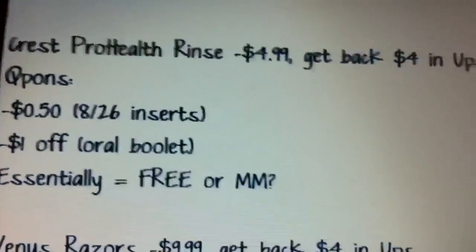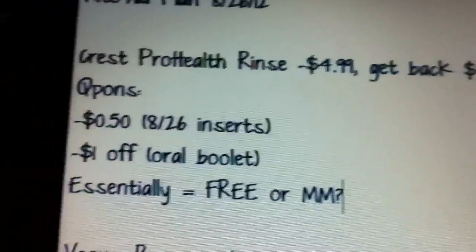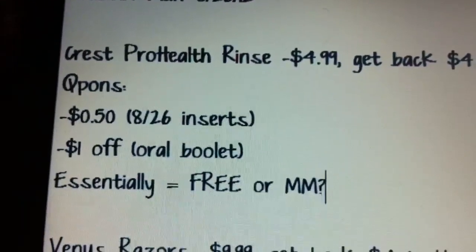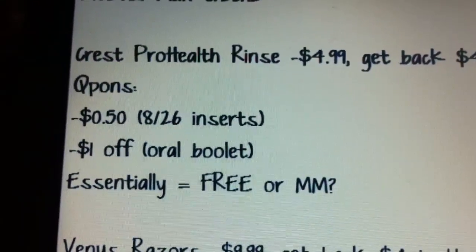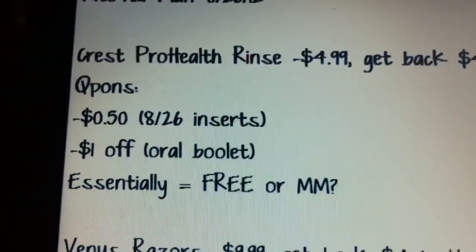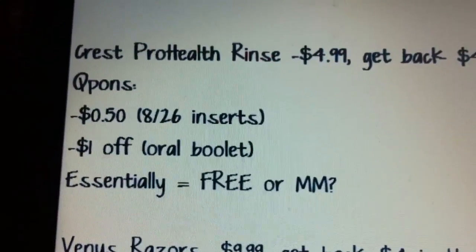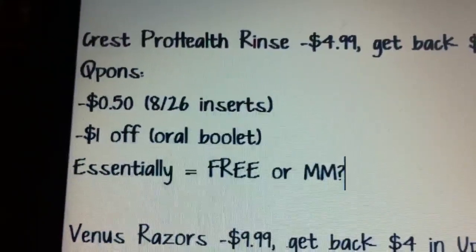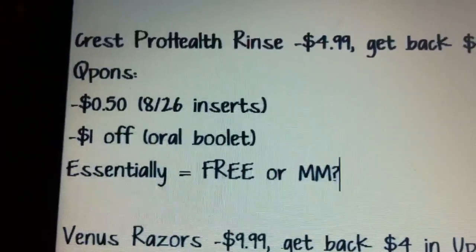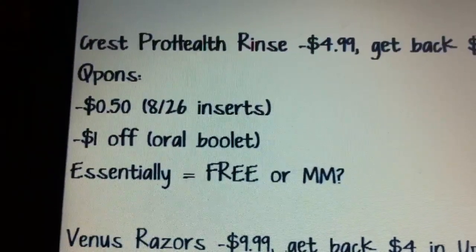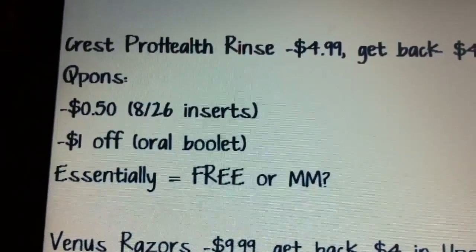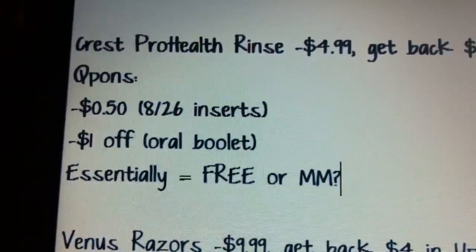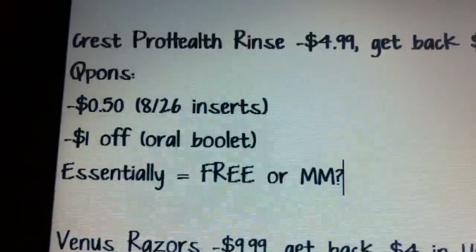The first deal is on the Crest Pro Health Rinse — it's $4.99 and you get back $4 in UPs. I know it's oral care and I'm trying not to focus as much on oral care, but if it's free or a moneymaker I'm still going to try to pick it up to donate. We're supposed to get 50-cent-off coupons in this Sunday's inserts, and there are also dollar-off coupons in the oral care booklet. If you can use both together it'll be a small moneymaker; otherwise it'll be 49 cents for the rinse — a really great freebie or moneymaker.